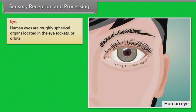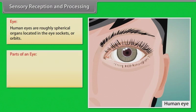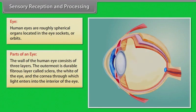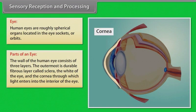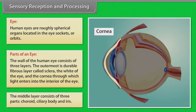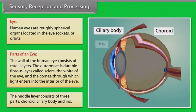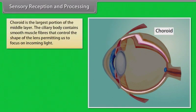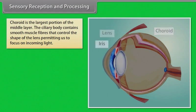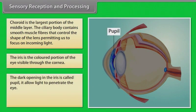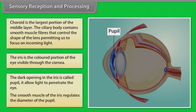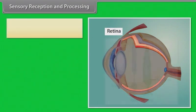Human eyes are roughly spherical organs located in the eye sockets or orbits. The wall of the human eye consists of three layers: the outermost durable fibrous layer called the sclera, and the cornea through which light enters. The middle layer consists of three parts: choroid, ciliary body, and iris. The ciliary body contains smooth muscle fibers that control the shape of the lens, permitting focus on incoming light. The iris is the colored portion of the eye; its dark opening is called the pupil.